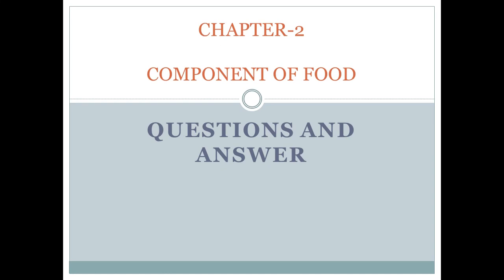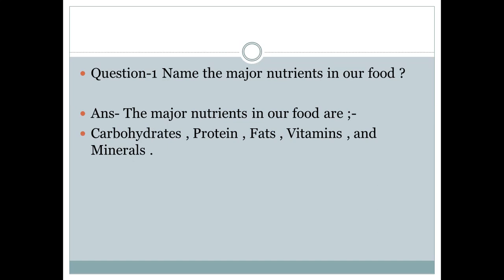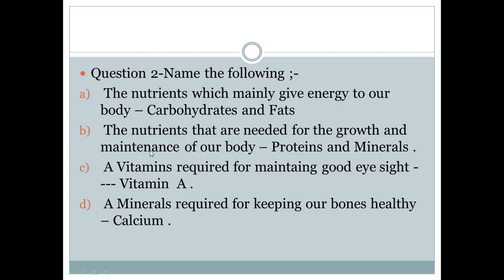Question number one: Name the major nutrients in our food. Answer: The major nutrients in our food are carbohydrates, proteins, fats, vitamins, and minerals.